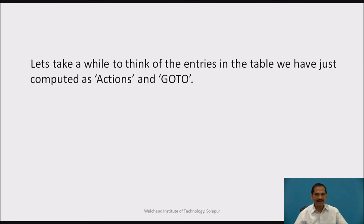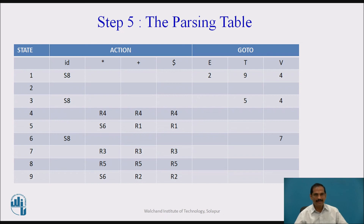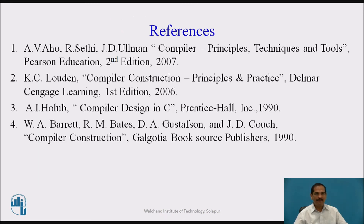Let us take a moment to think about the entries in the table. We have just computed the actions and GOTO entries. Actions are for terminals and GOTO are for non-terminals. We now fill our table with 9 states (1 to 9), actions on terminals id, star, plus, dollar, and GOTO on E, T, and V. We put results such as action[1,id] = S8 in the corresponding cells, and so on, filling the complete table. This table will be used to parse strings of the form a star b plus c, or any other string encountered in a source program.